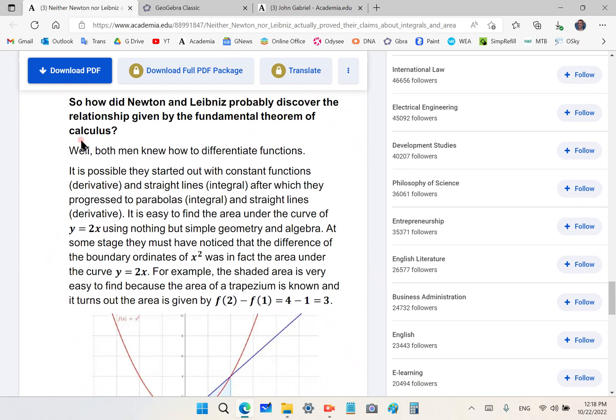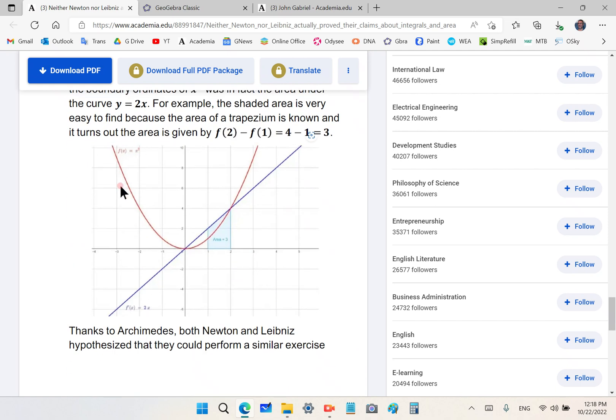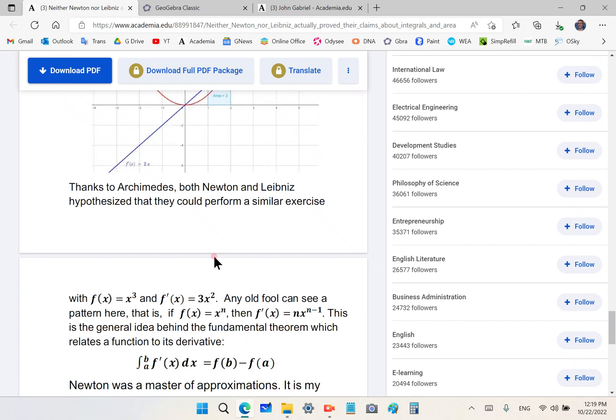How did Newton and Leibniz probably discover the relationship is the next interesting question. Well, it probably started out with simple functions like constant functions which he interpreted as a derivative and straight lines which he interpreted as integral, and both of those have areas that are very easy to find without calculus, without the methods of the fundamental theorem. Then of course he proceeded to more difficult ones like the parabola, and thanks to Archimedes both of them could find the, could do a similar exercise with x cubed and 3x squared. Newton wouldn't have touched x cubed with a hundred foot barge pole because there was no way he would be able to do that.